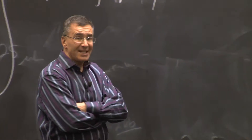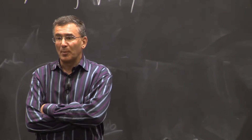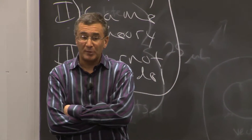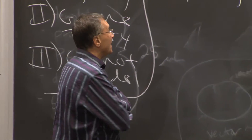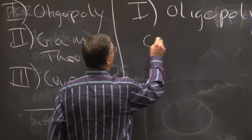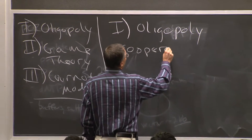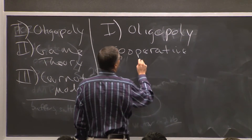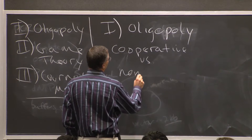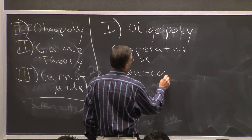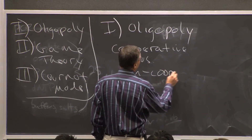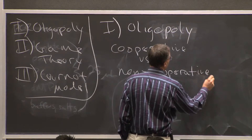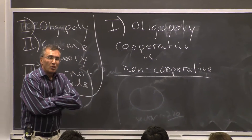What we're going to talk about today is that in these markets, when you have multiple firms, firms can behave both cooperatively or non-cooperatively. And it's going to turn out to matter a lot which they choose.